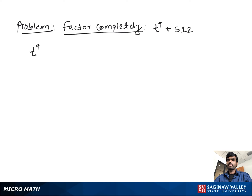Factor completely: t^9 + 512. So first we write this both in the form of cubes. You can write t to the third cubed plus 8 to the third. Now it looks like a³ + b³ form.